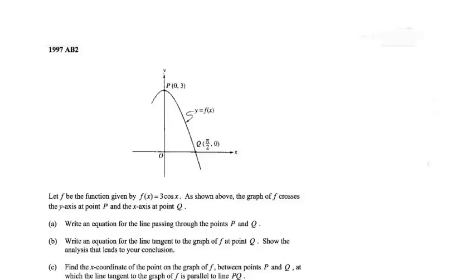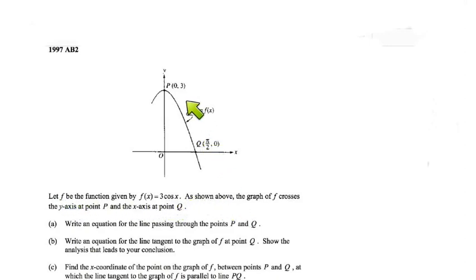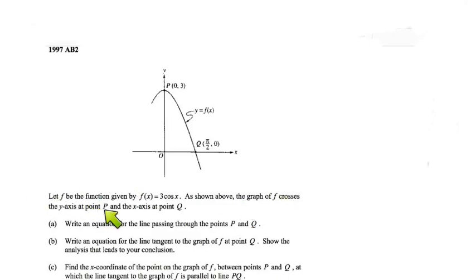1997 AB number two. I wish FRQ questions were this simple nowadays. We have the function three cosine x shown above — it's already labeled for me. That's one thing I always make sure to do with calculus problems: if they give me a graph, I label it f, f prime, or f double prime to avoid simple mistakes. It crosses the y-axis at point P and the x-axis at point Q.